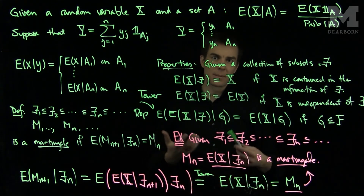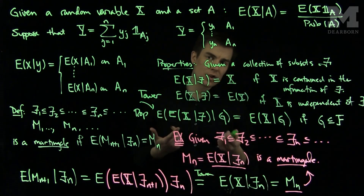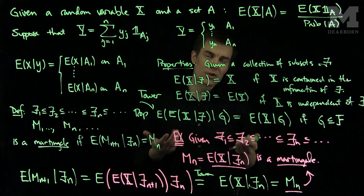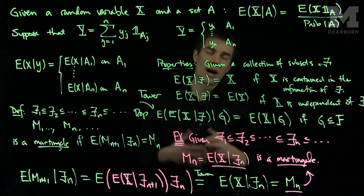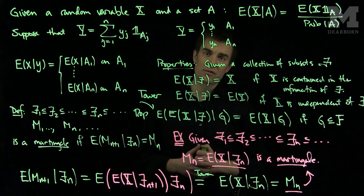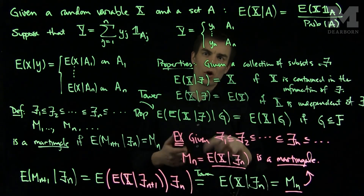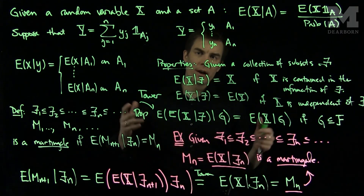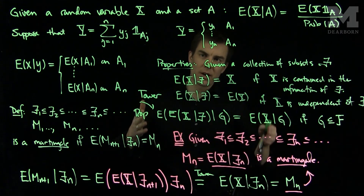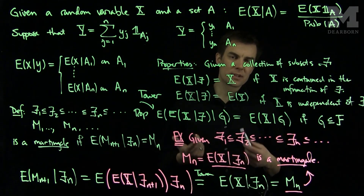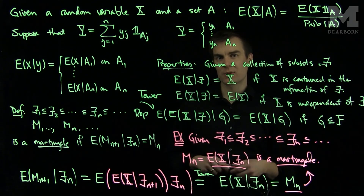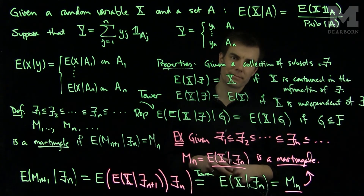These are the three fundamental properties of conditional expectation. If I condition a random variable on information the random variable already knows, I output the random variable. If I condition on information independent of the random variable, I output the expected value. Finally, the tower property: conditioning on large and small information is the same as conditioning on the small information alone. These properties are used to establish martingale sequences, which is very useful for computing and making financial decisions. Thank you very much.